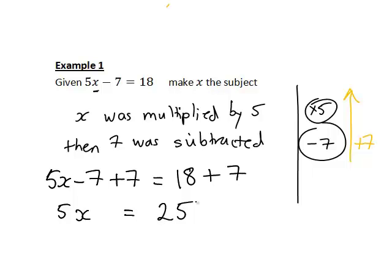So adding 7 to both sides has had the desired effect of starting to isolate what we want, which is x.